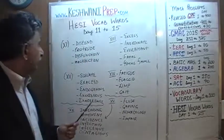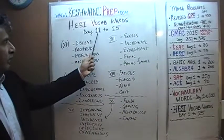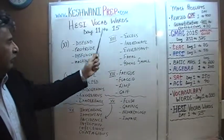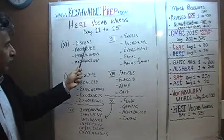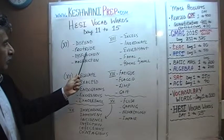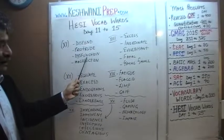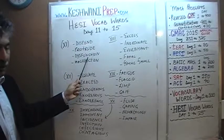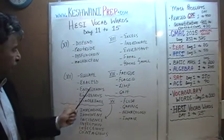Here we go. Here's the list. This is from day number 11 through 15. On day number 11, we learned: distant, protrude, dysfunction, and the difference between dysfunction and malfunction.